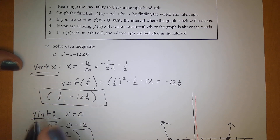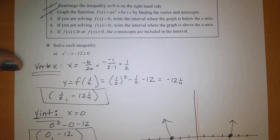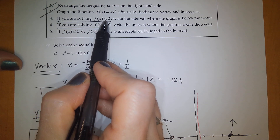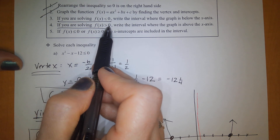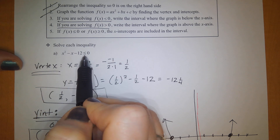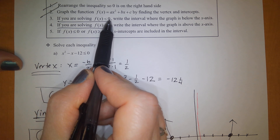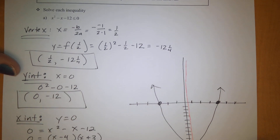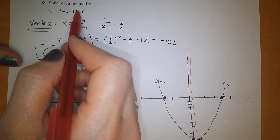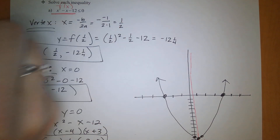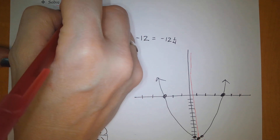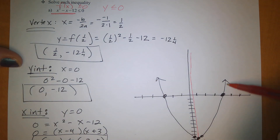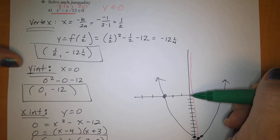Going back to the instructions, now that we've graphed the function, we have two scenarios: are we looking for where the function is less than 0, or greater than 0? We're looking for where the function is less than 0, which is scenario 3 — write all the intervals where the graph is below the x-axis. Where is y less than 0? That means below the x-axis, where y is negative.